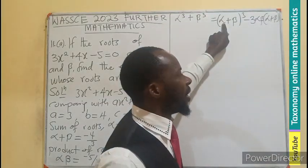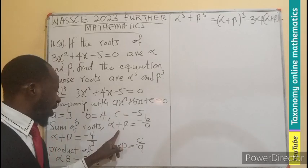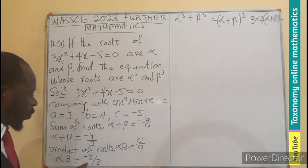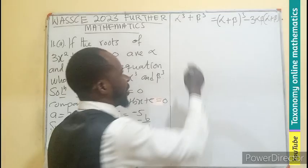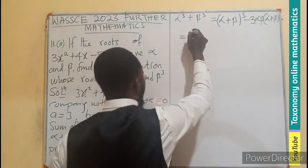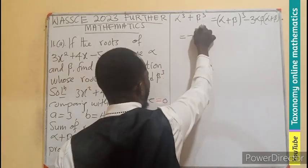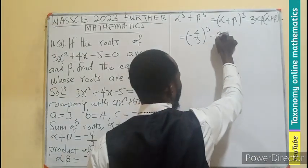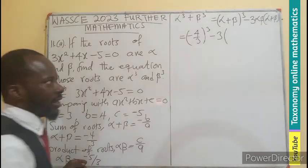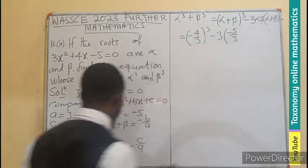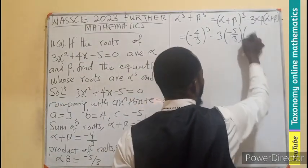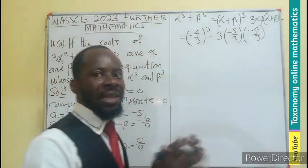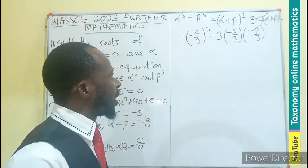And what is the expansion for this? This is going to be (α + β)³ - 3αβ(α + β). If you have the cube, the sum of the cube, it becomes (α + β)³ - 3 times the product times the sum. So in this case, I can see α + β sitting in here as -4/3. Then α × β is also known as -5/3. So I will only do substitution in this case.